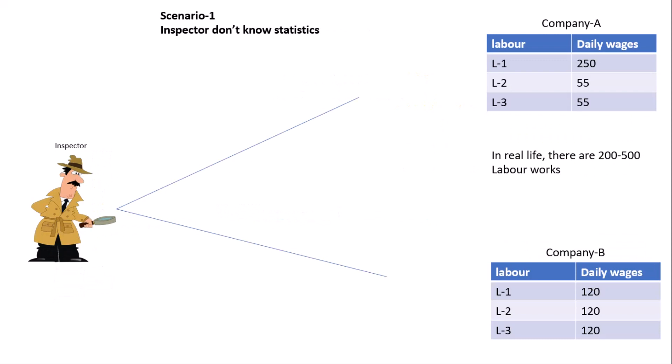On the right-hand side, you can see the data of Company A. There are only three laborers. And below, the data of Company B. In real life, there are 200, 500, even thousands of laborers working in a particular project, but for simplicity I will show only three laborers.